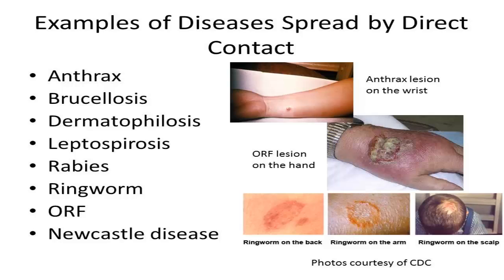The kinds of tissues or body fluids a person would need to have contact with in order to be exposed to these diseases may differ. For instance, a person may become infected with ORF, ringworm, and dermatophyllosis after contact with an infected animal's skin. Direct contact with infected reproductive tissues like placenta and aborted fetuses could expose a person to brucella.